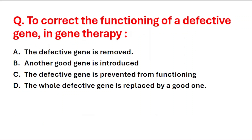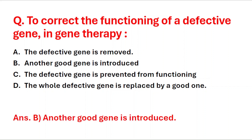Next question: to correct the functioning of a defective gene in gene therapy — A: the defective gene is removed, B: another good gene is introduced, C: the defective gene is prevented from functioning, D: the whole defective gene is replaced by a good one. The right answer is option B, another good gene is introduced.